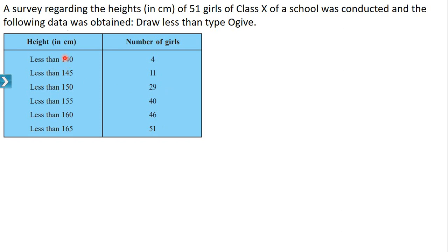When less than is given, these are the upper limits: 140, 145, 150, 155, 160 and 165. These are the upper limits and the corresponding values are cumulative frequencies.